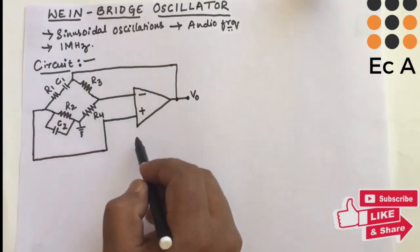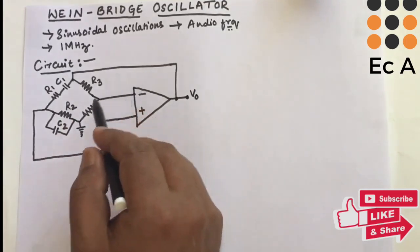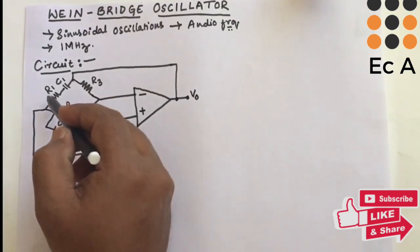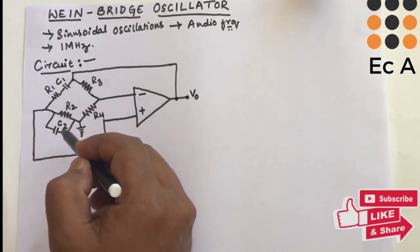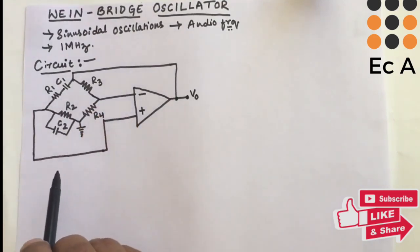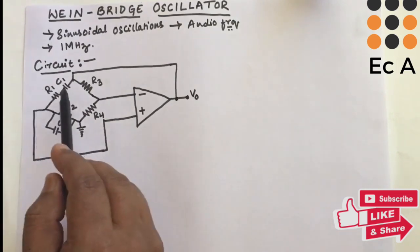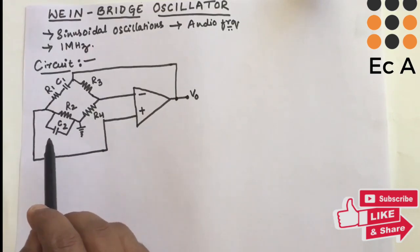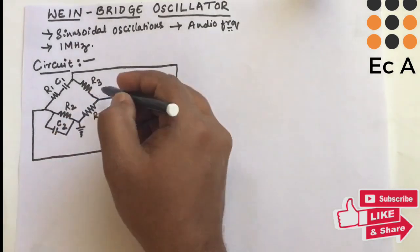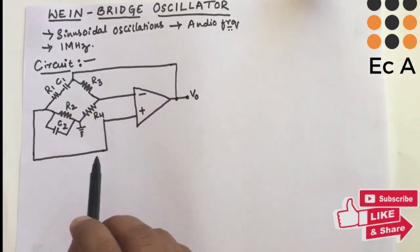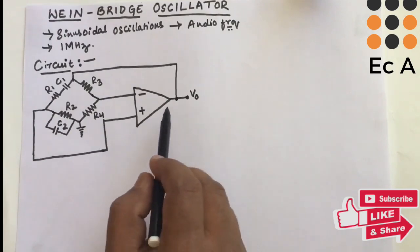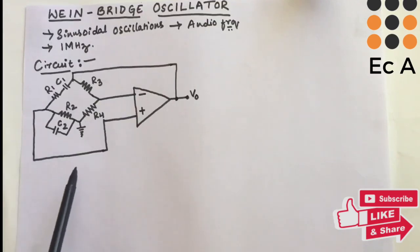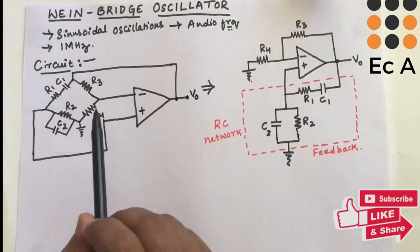Now let us see the circuit of the Wien Bridge Oscillator. It consists of an op-amp and an RC bridge circuit. Resistors R1 and R2 and capacitors C1 and C2 form the frequency adjustment elements. The series combination of C1 and R1, and the parallel combination of C2 and R2, allow only one frequency component. Resistors R3 and R4 form part of the feedback path. The output of the op-amp is connected as the bridge input, and the output of the bridge circuit is connected as the input to the op-amp.